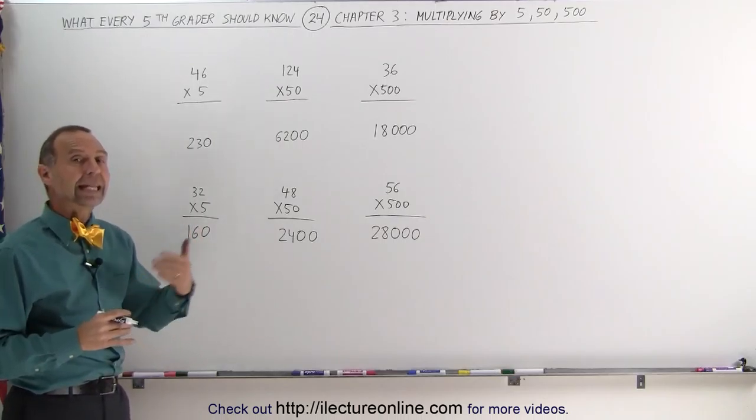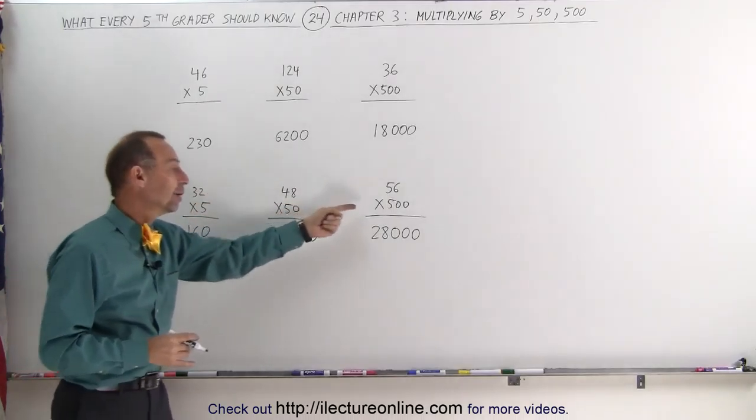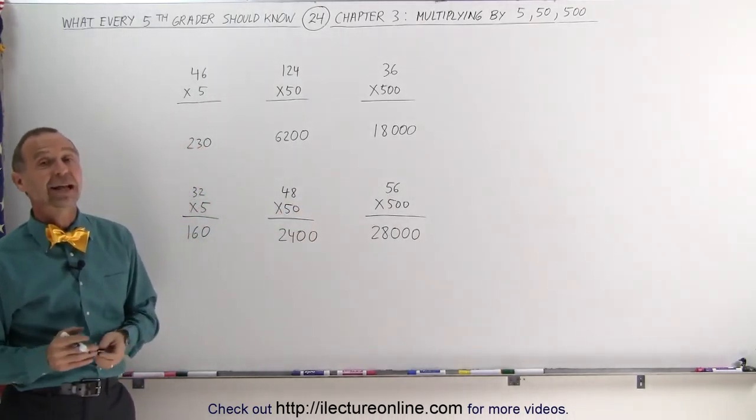Divide the number by 2 and add either 1, 2, or 3 zeros, depending upon if you're multiplying times 5, times 50, or times 500. And that's how we do that.